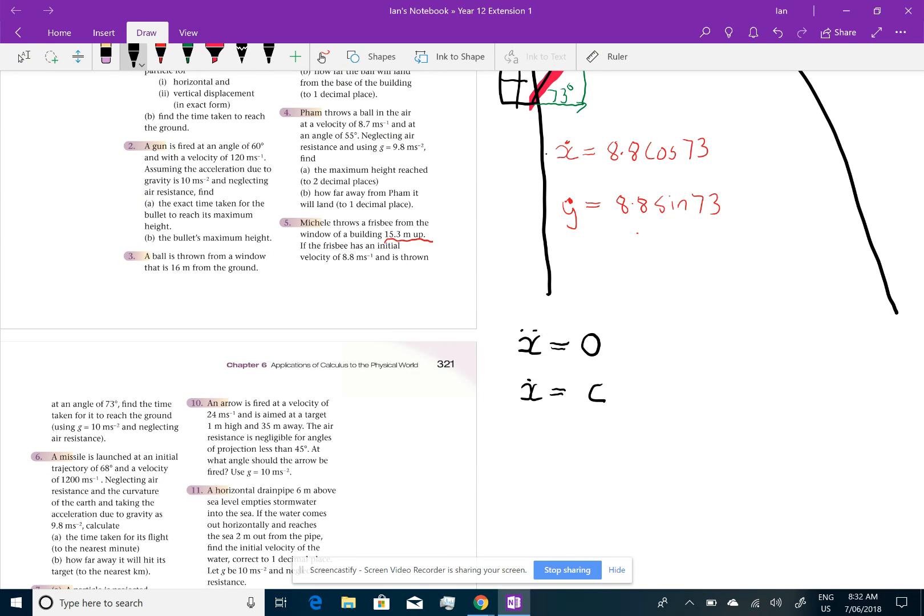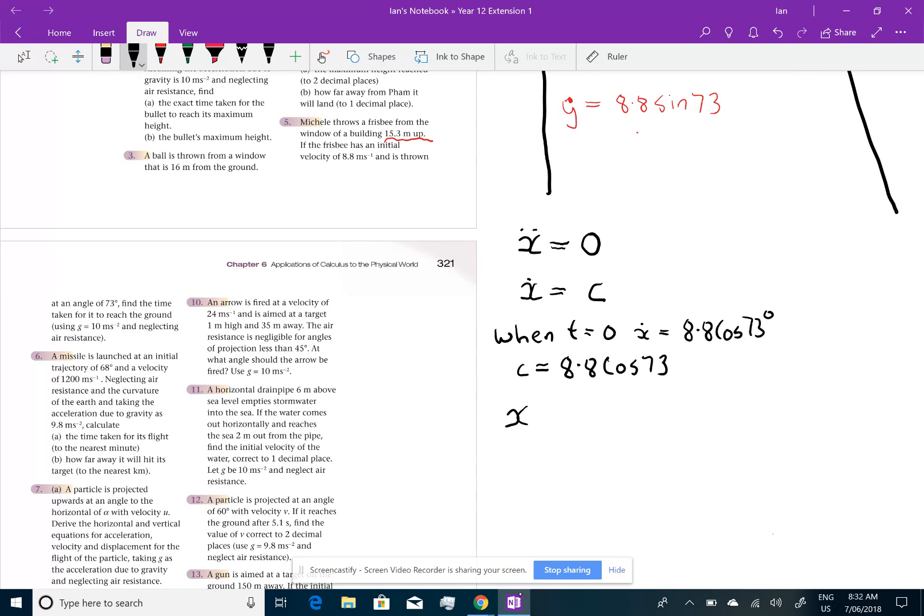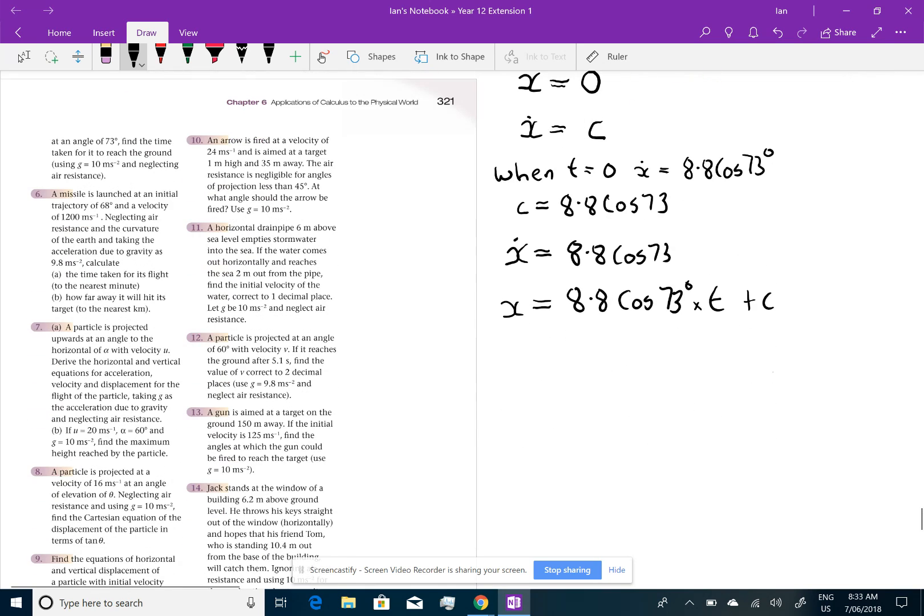Let's go back to this equation, in terms of the horizontal displacement, the horizontal velocity. So, when t equals 0, velocity equals 8.8 cos 73. So, the constant will equal 8.8 cos 73. Therefore, our velocity is 8.8 cos 73. To get the displacement, I integrate that. 8.8 cos 73 degrees times t plus some constant. I like to put the t right beside the 8.8, so it doesn't get confused with the angle, plus the constant.